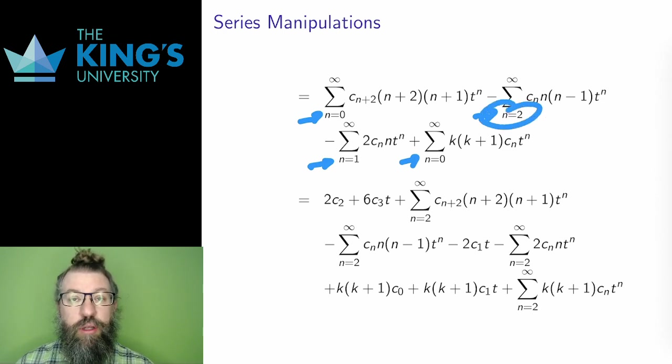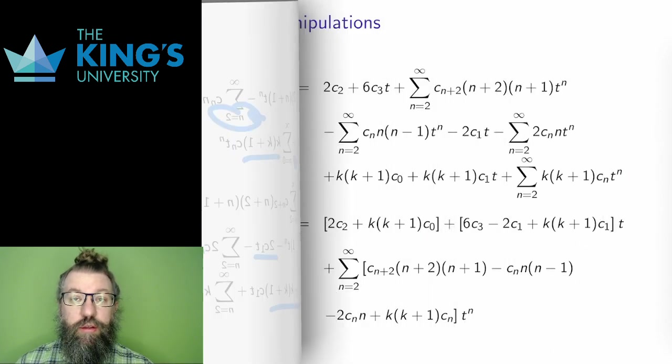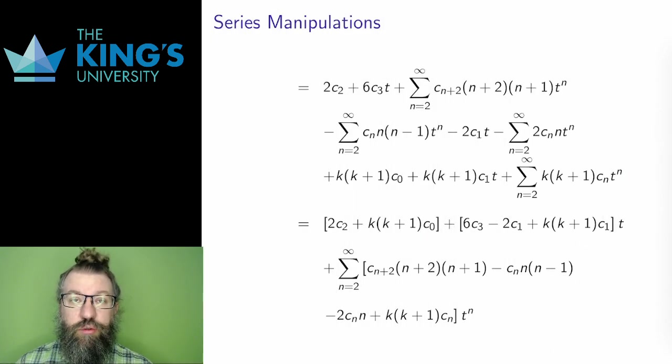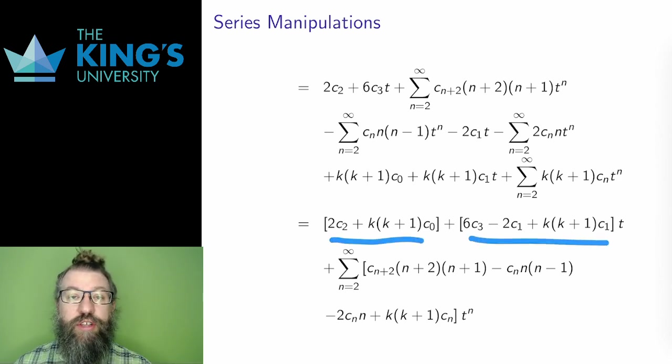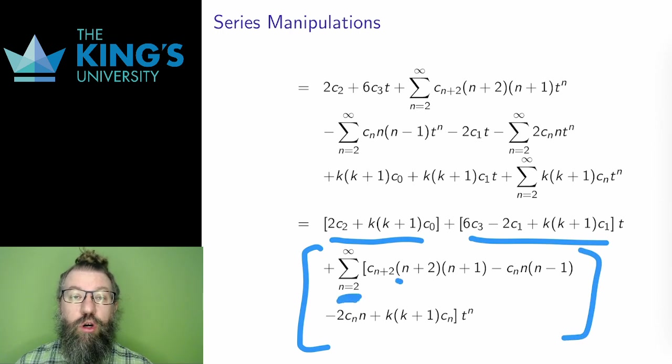To make this work, I pull out two terms from the first series, none from the second, one from the third, and two from the fourth. Here are all those terms that I've pulled out. Now I just need to group everything. The series starts at n equals 2, which is t squared. There are two constant terms, which I group here, and there are three linear terms, which I group here. Then the remaining terms are grouped inside one sum. There are four terms, one from each of the four original series.